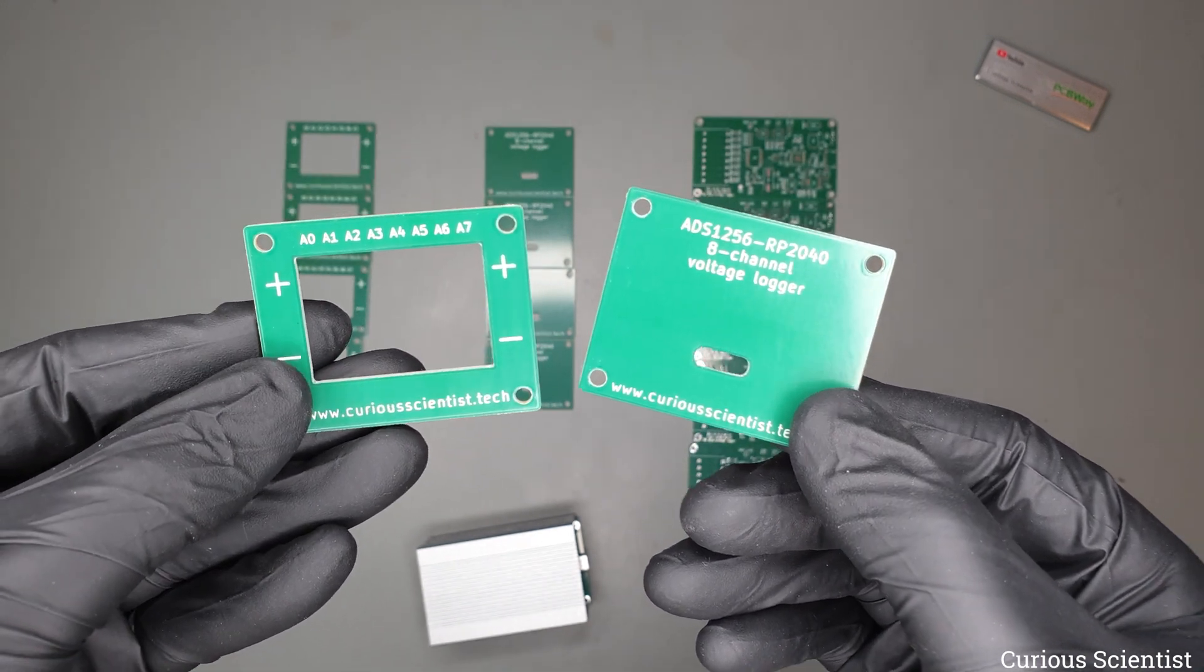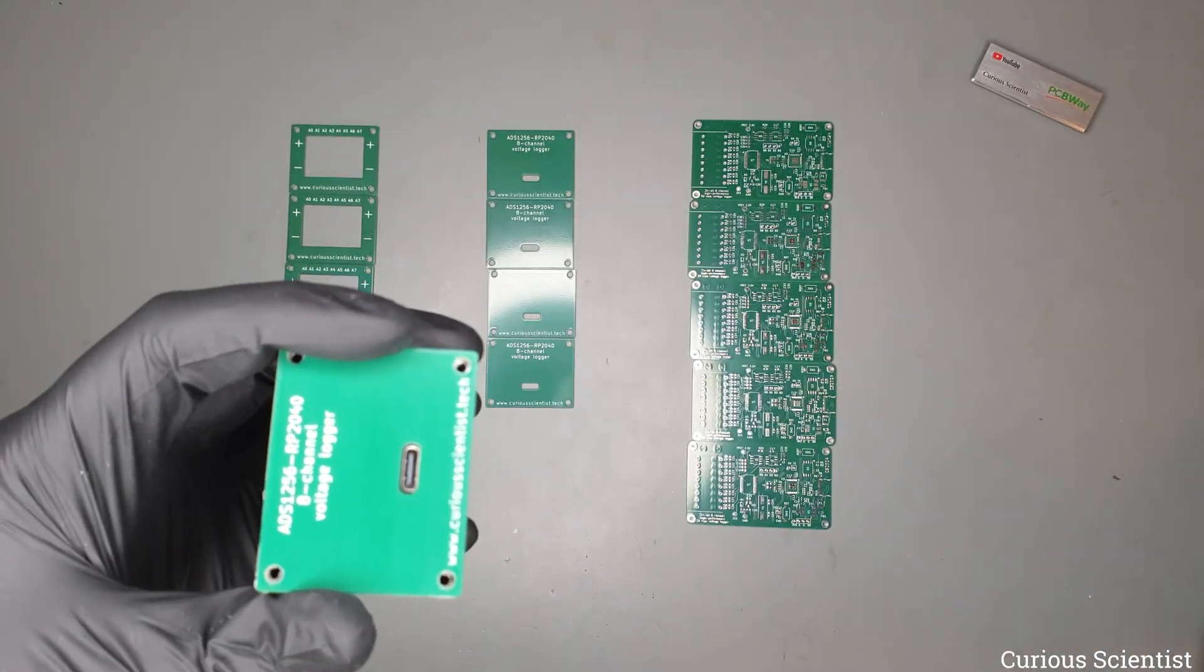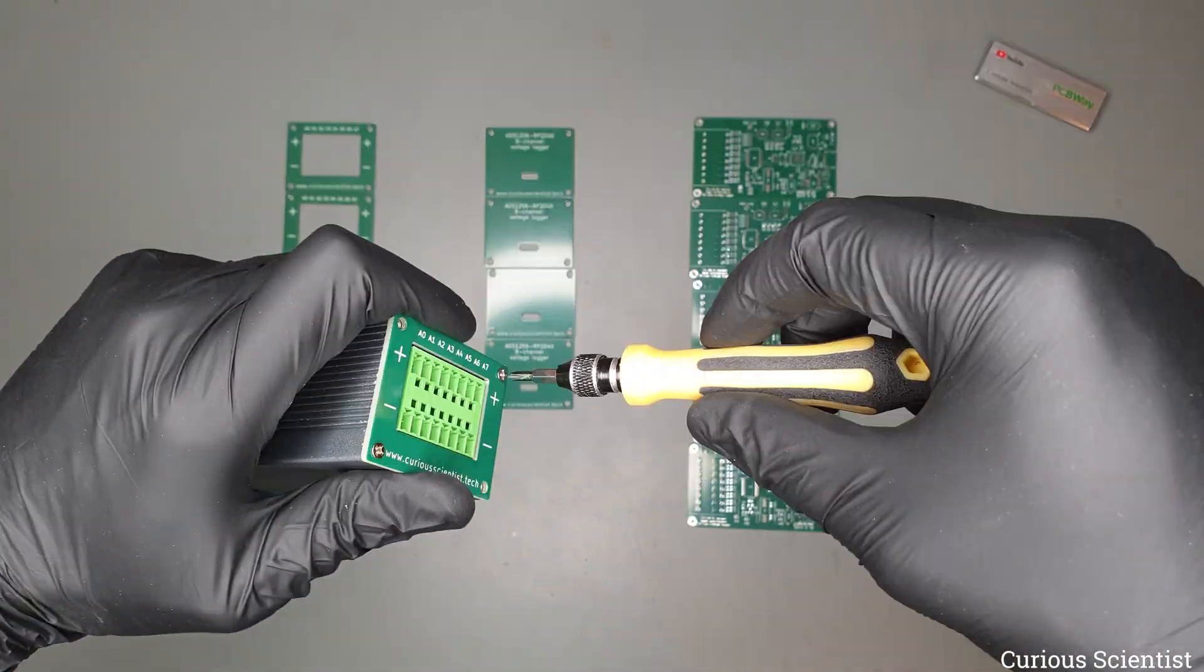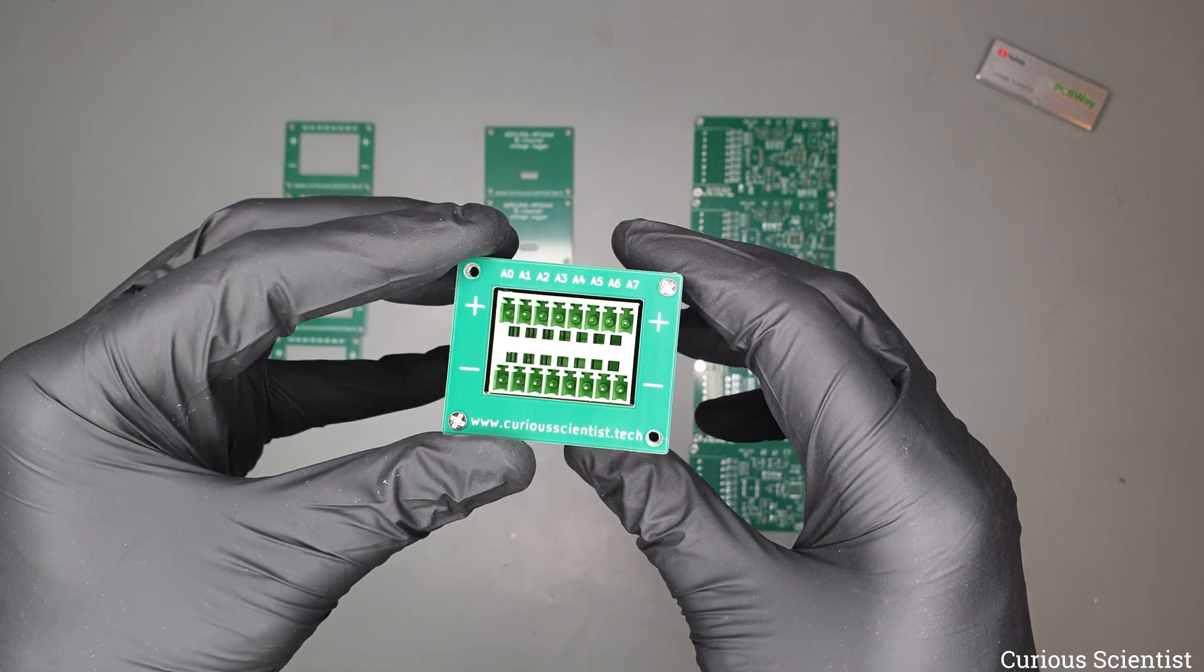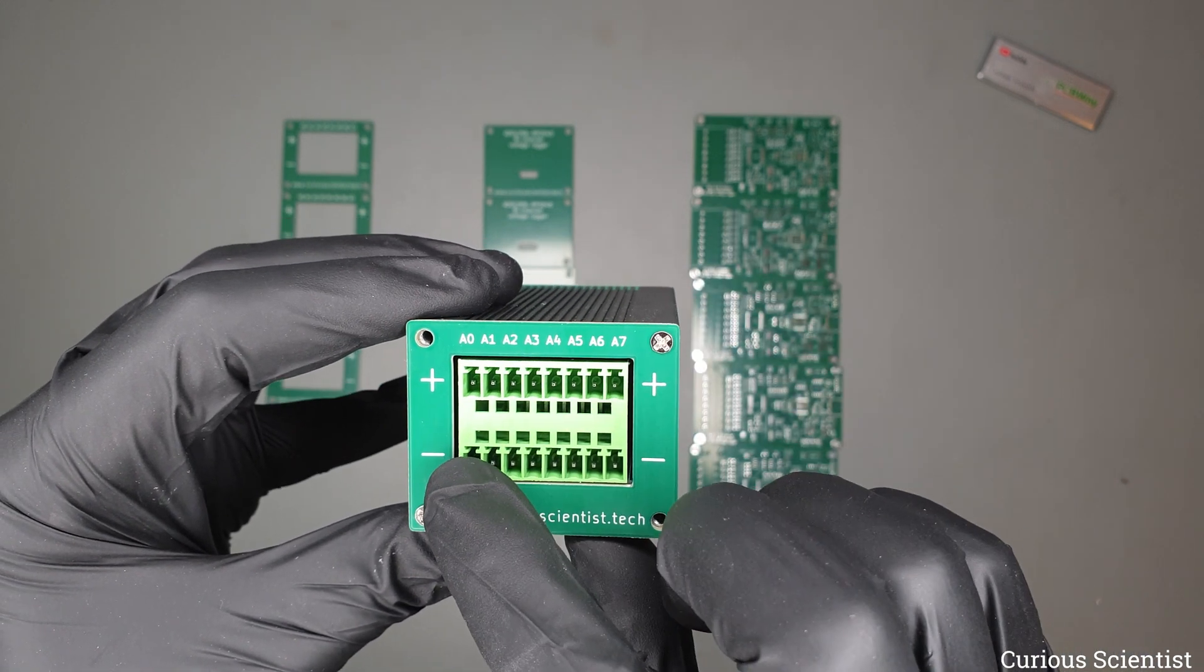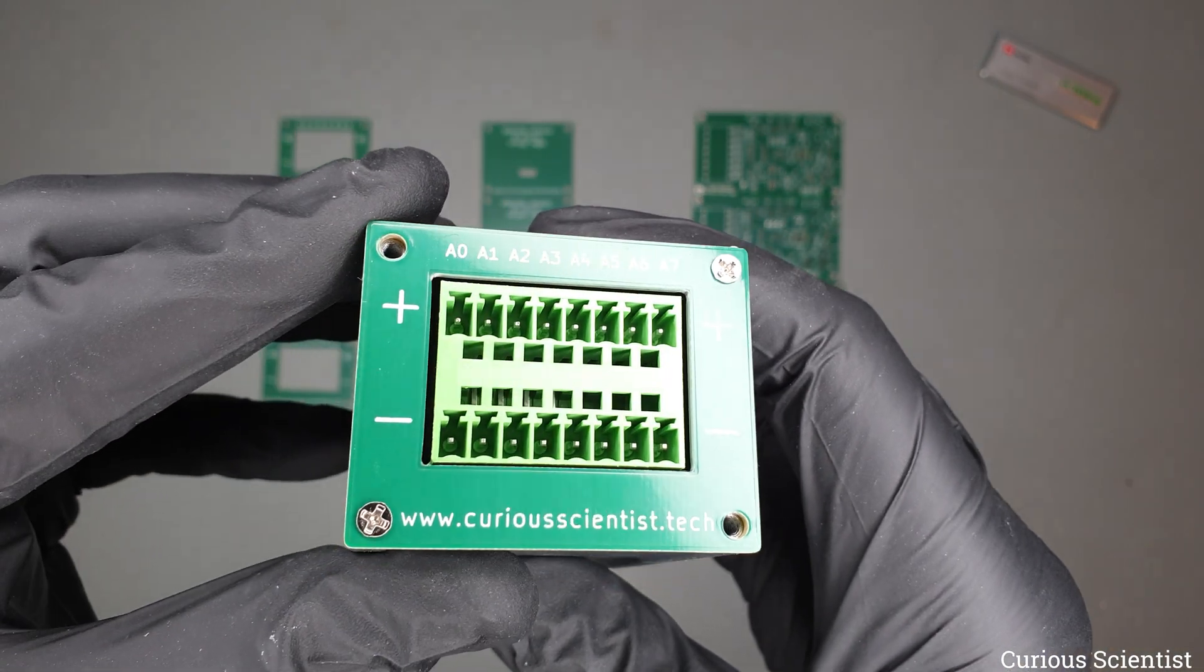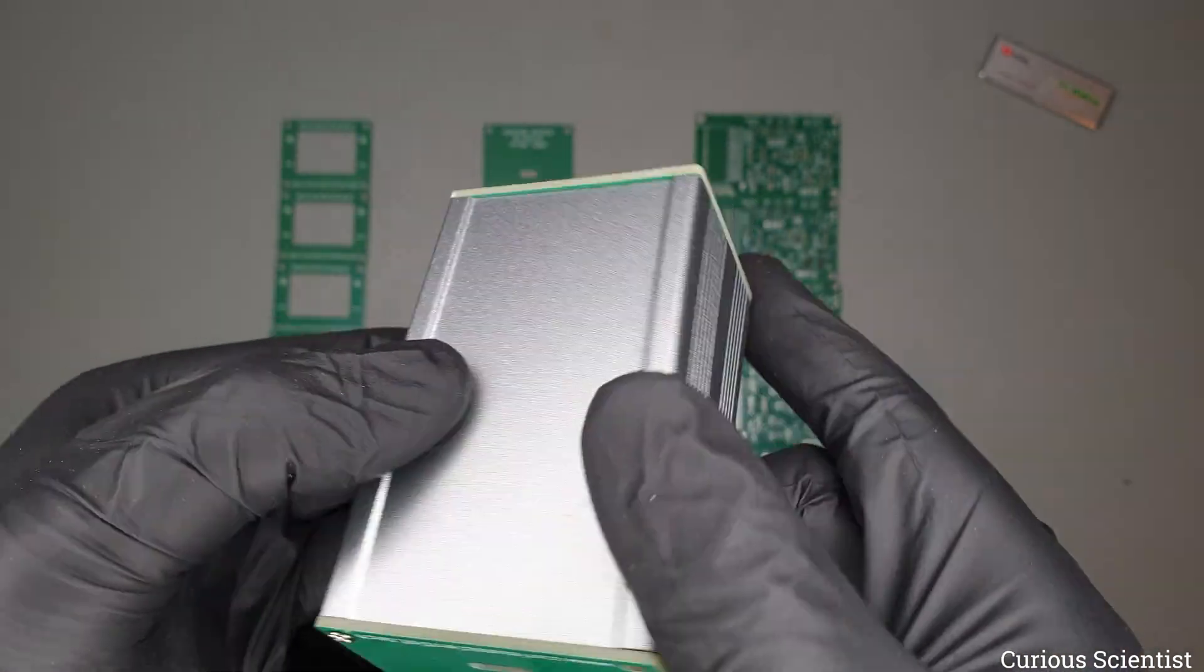Now coming back to these two parts, let's test them and see how they fit. Here we have the housing and we can try it. I will just fix it with two screws because I'm lazy. This is the final result, you can see there is a slight gap. I was a bit generous with the dimensions because I was not sure about the precision and tolerances. I could have decreased the gap here by at least one millimeter on these sides, but nevertheless it's still fine.